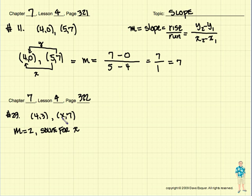Let's try this for problem number 29. The ordered pairs are 4, 3 and x, 7. They gave us the slope this time, and they said solve for x. So here we go. Let's do the same thing. So we're going to do 4, 3. We're going to do x, 7.